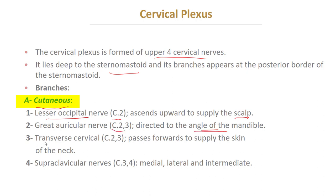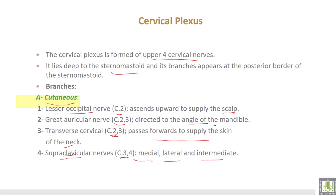Third, the transverse cervical nerve, root value cervical two and three, which passes forward to supply the skin of the neck. Fourth, the supraclavicular nerve, root value cervical three and four, divided into three terminal branches: medial, lateral, and intermediate.